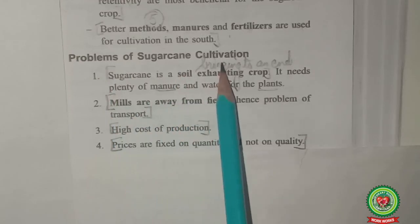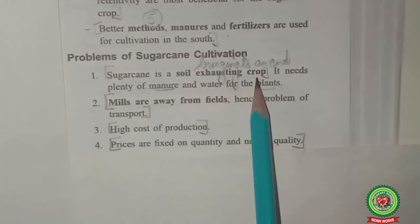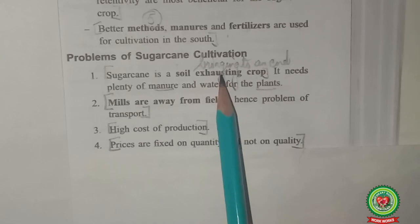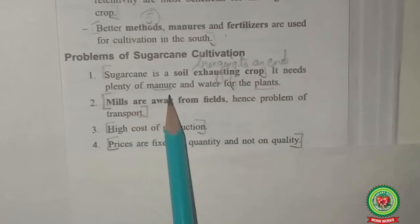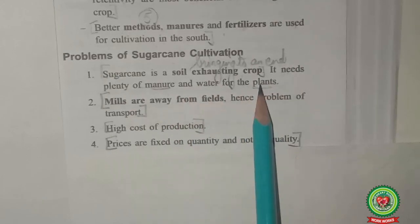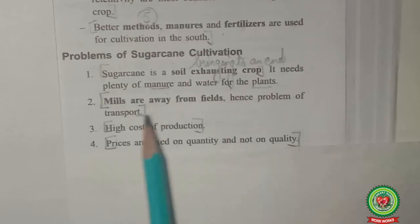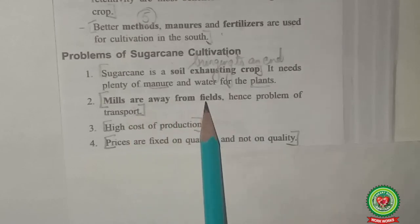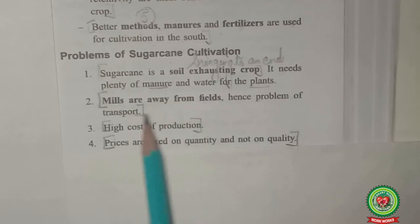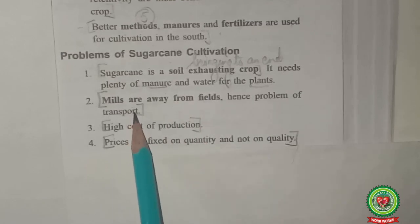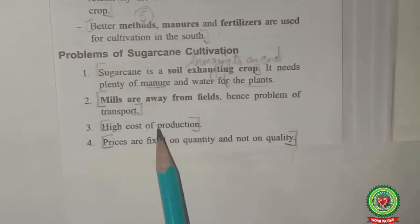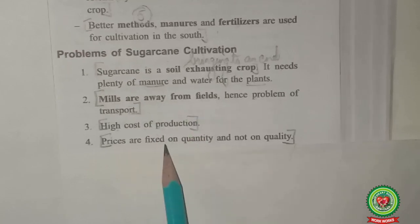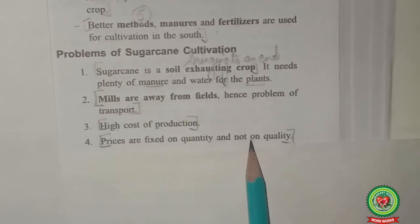Problems of sugarcane cultivation: Sugarcane is a soil-exhausting crop — it depletes soil fertility completely — and needs plenty of manure and water to regain lost fertility. Sugar mills are often located away from the fields, causing transportation problems. The cost of production is quite high as sugarcane is a heavy crop. Prices are fixed on quantity and not on quality.